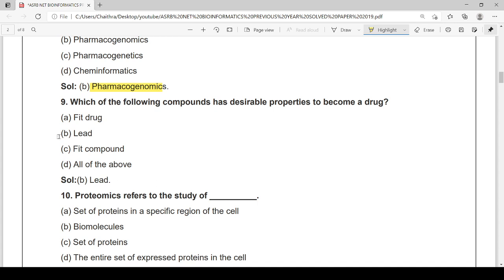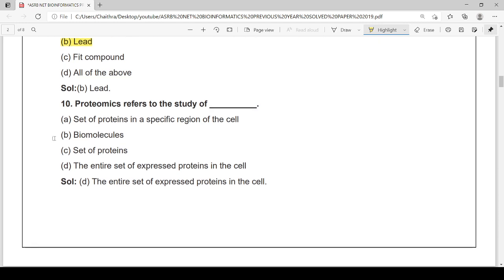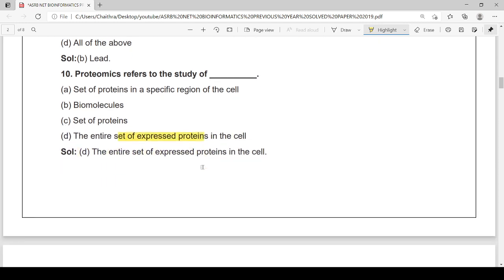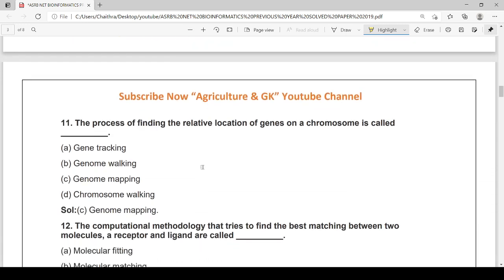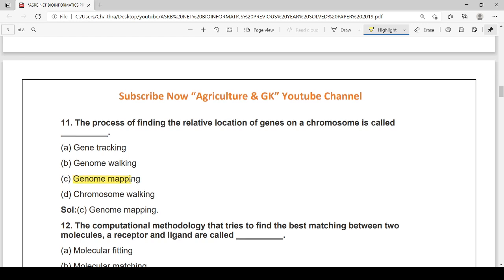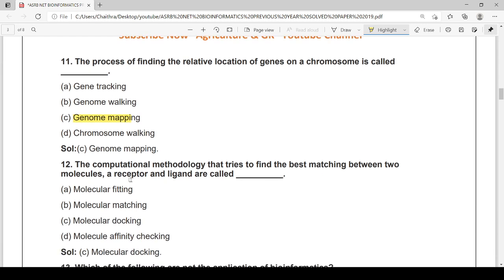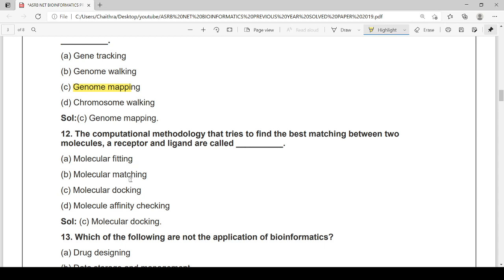Identification of drugs through the genomic study is called pharmacogenomics. Which of the following compounds has desirable properties to become a drug? It is lead, option B. Proteomics refer to the study of the entire set of expressed proteins in the cell, option D. The process of finding the relative location of genes on the chromosome is genome mapping. Computational methodology that tries to find the best matching between two molecules, a receptor and ligand, is molecular docking.